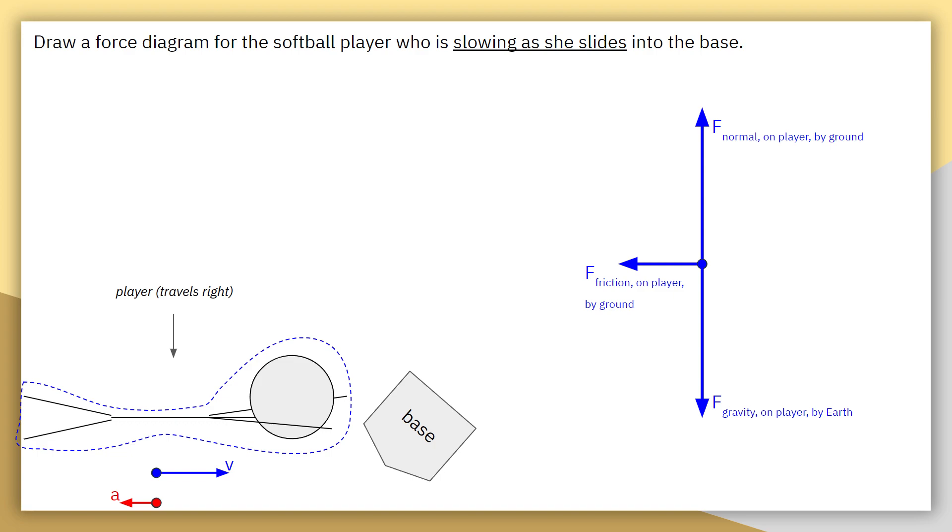This means we can clean up that free body diagram to just show the three forces we have interacting on this person, getting rid of that coordinate plane, and then write the summation equation.